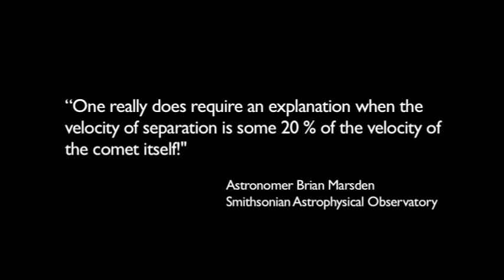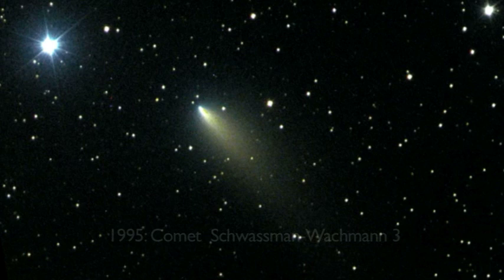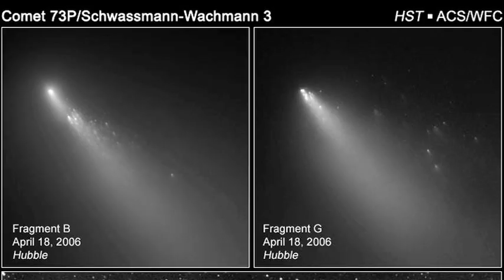The progressive disintegration of the comet Schwassmann-Wachmann III beginning in 1995 left astronomers grasping for answers. Though 150 million miles away, it brightened spectacularly, shining hundreds of times more brightly than expected. Then astronomers discovered that the comet had broken into at least four pieces.